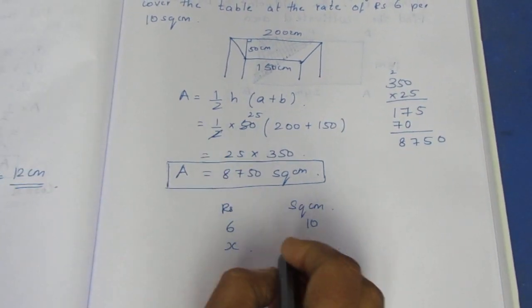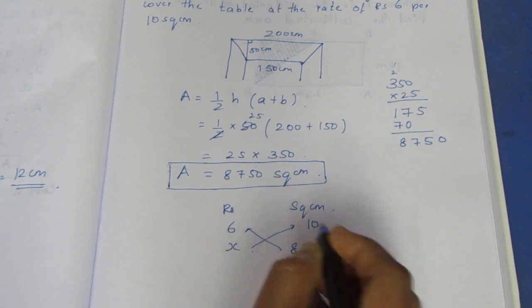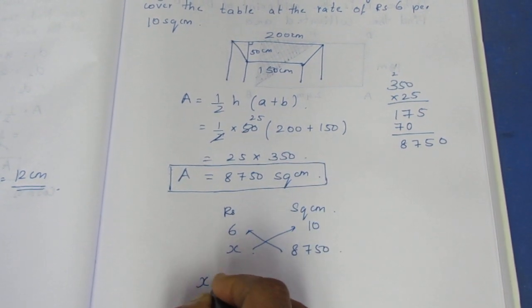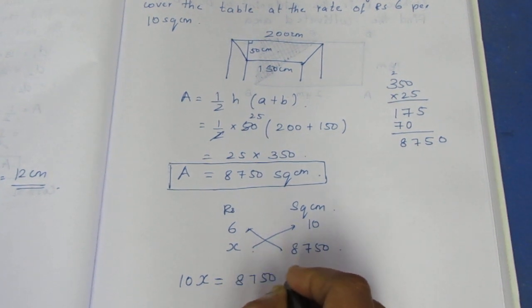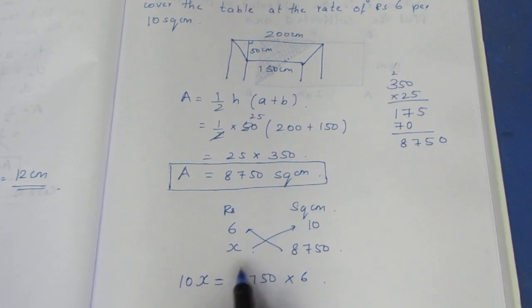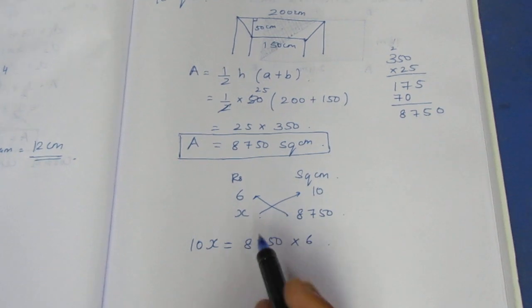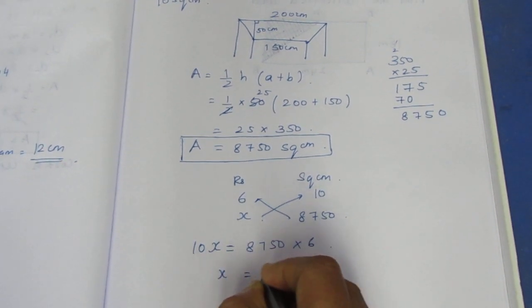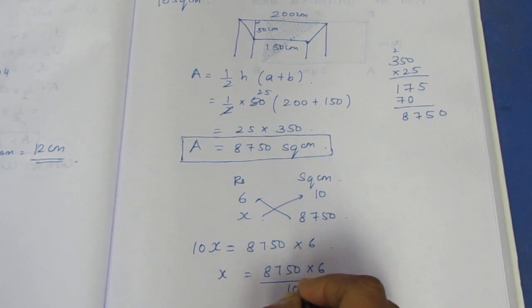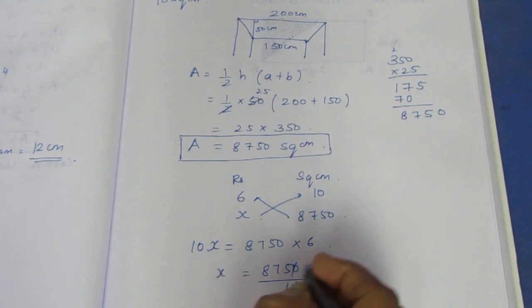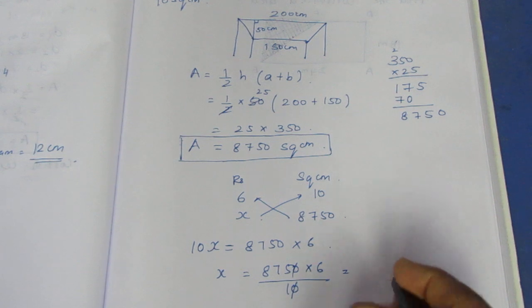Cross multiplying: 10x equals 8,750 into 6. So x equals 8,750 into 6 divided by 10. One zero cancels, so we multiply 875 by 6.